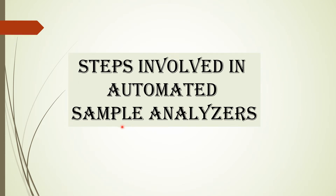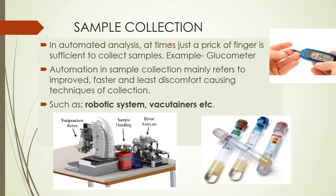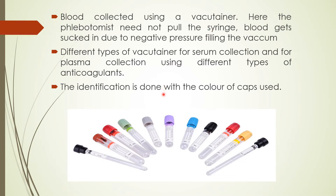Steps involved in automated sample analyzers: First is sample collection. In automated analysis, at times just a prick of a finger is sufficient to collect the sample — as in the case of a glucometer, where a small prick displays the amount of blood glucose present. Automation in sample collection refers to improved, faster, and least discomfort-causing techniques of collection. These include robotic systems or vacuotainers, which easily handle the sample and transport it.